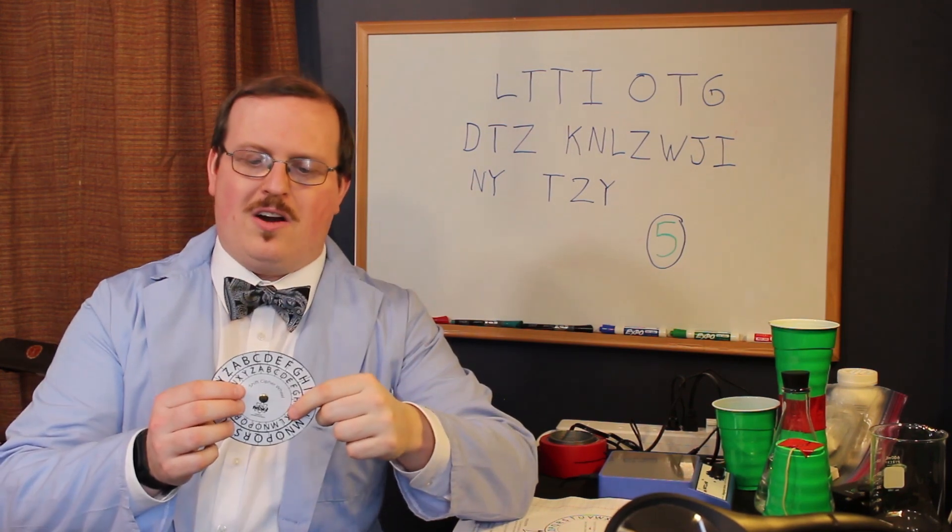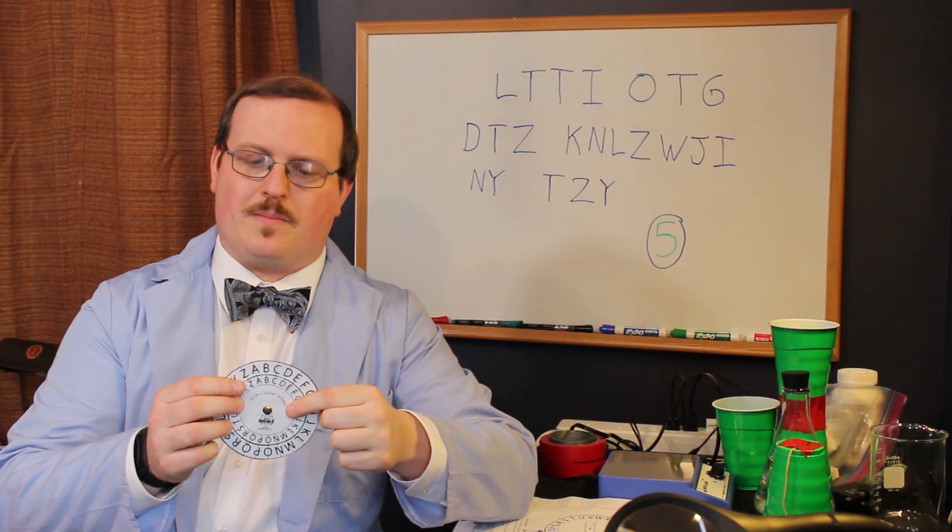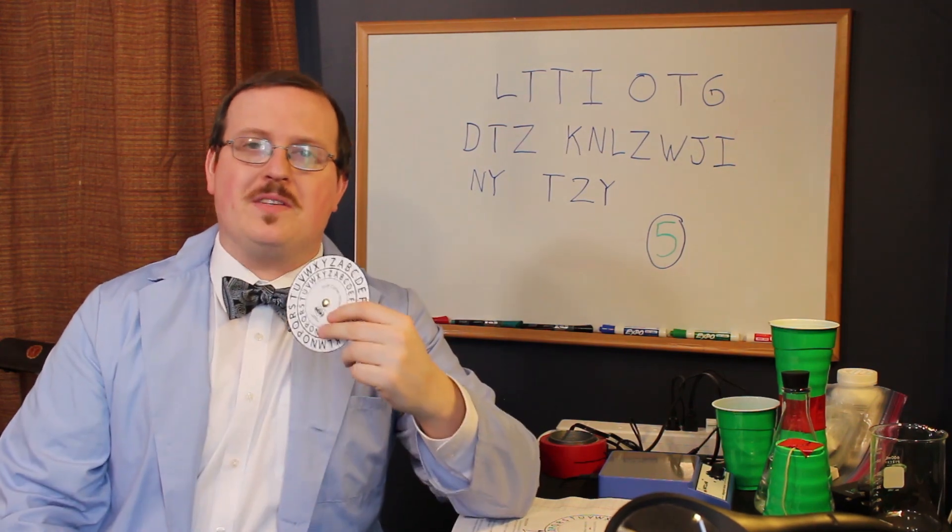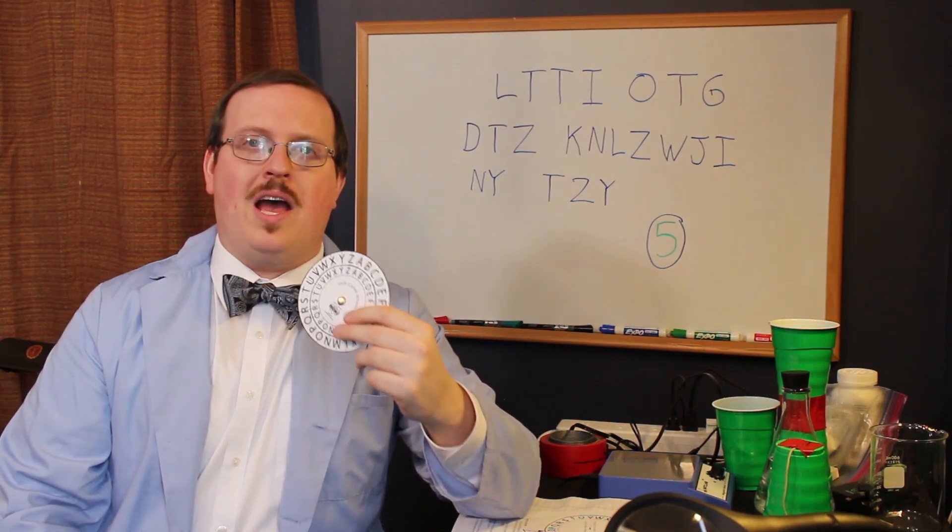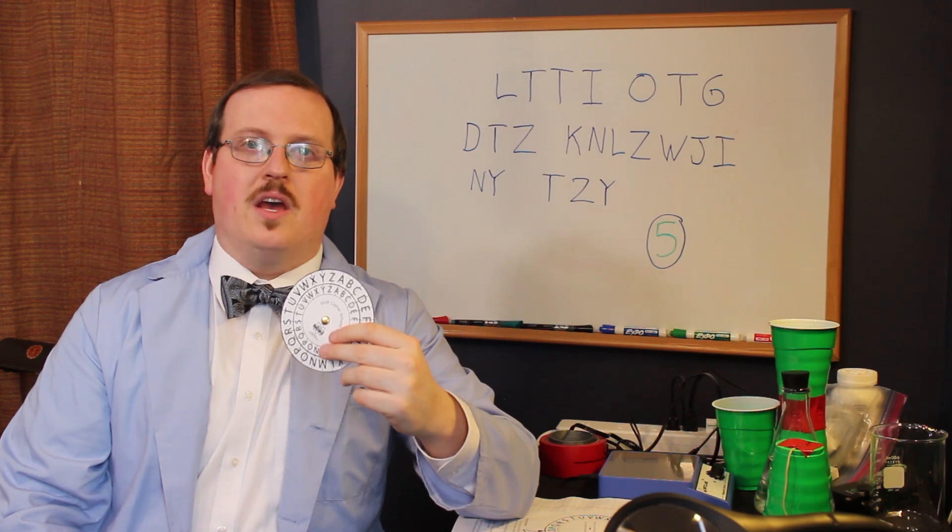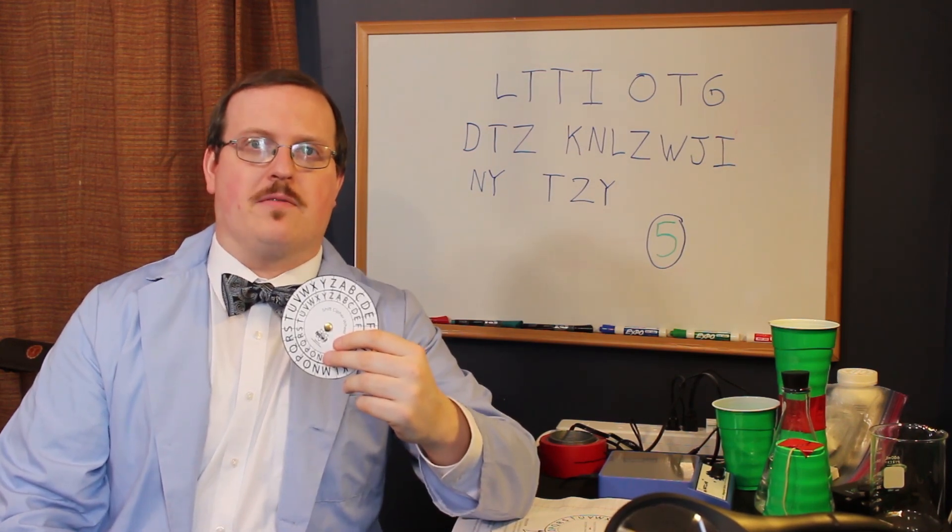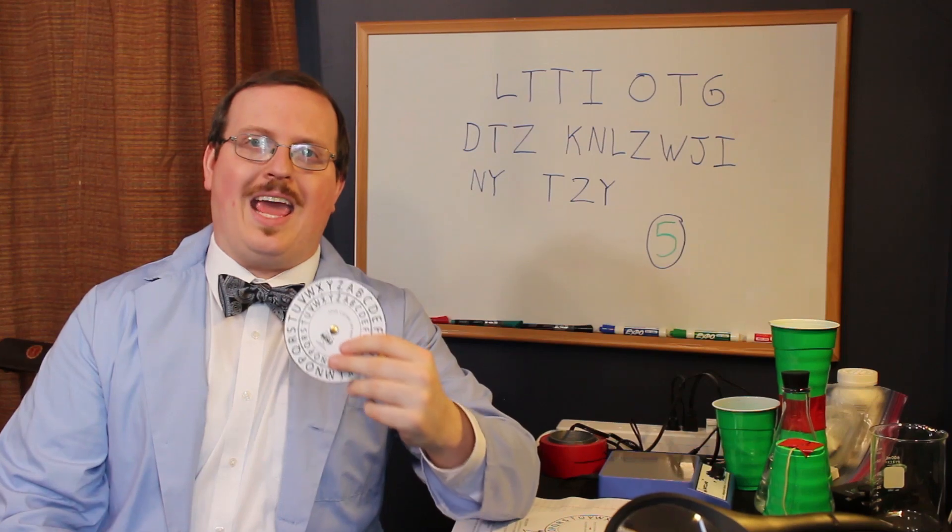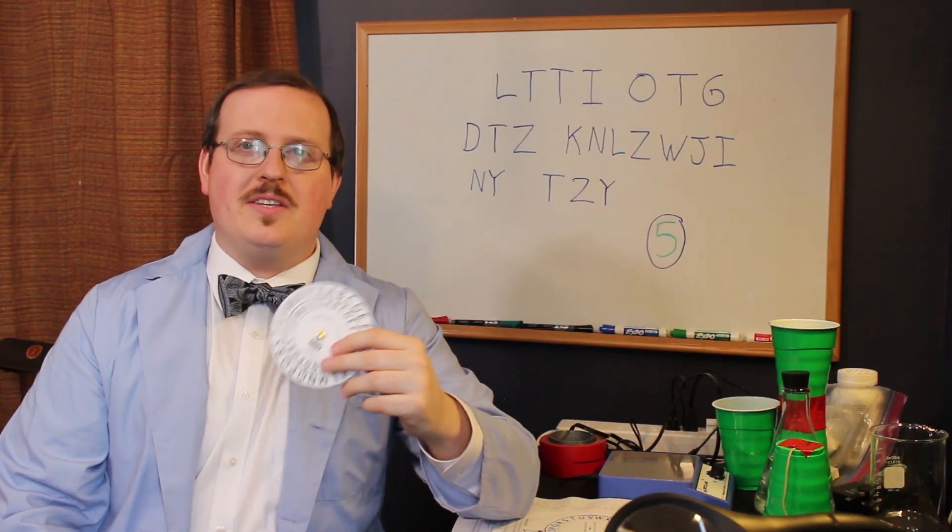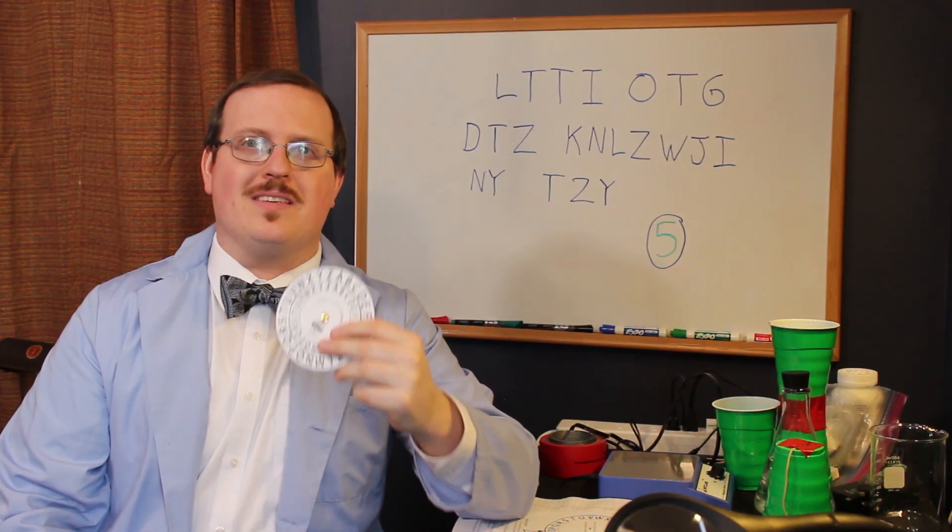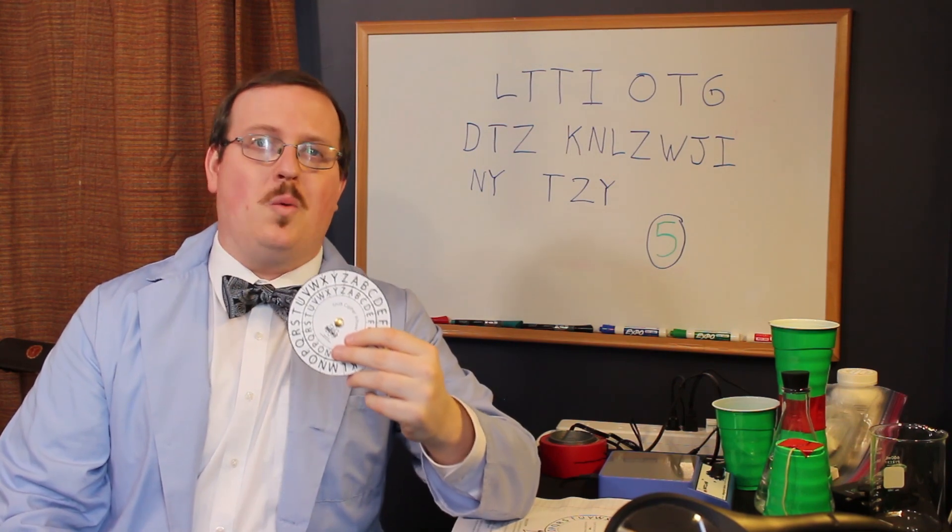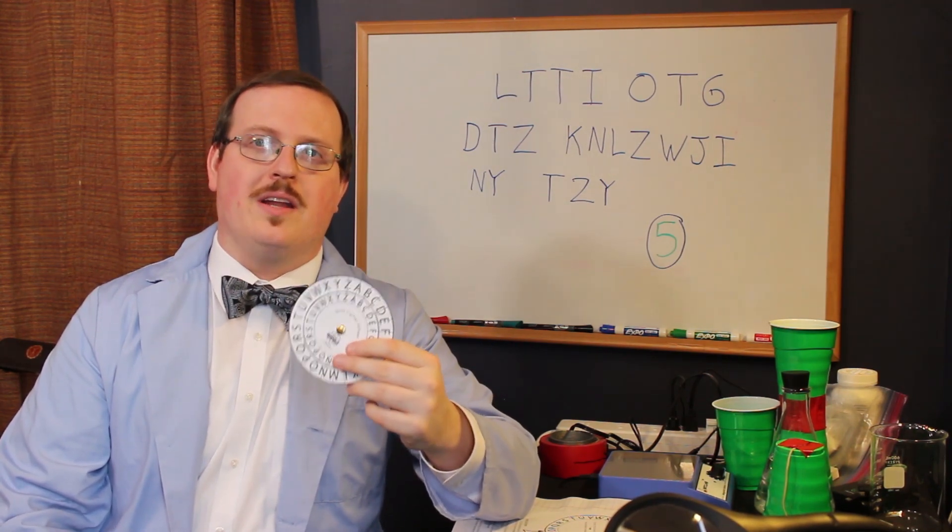This shift cipher has been around for thousands of years. In fact, sometimes you might hear it called a Caesar cipher because it was used in ancient Rome. This is one of the most simple ciphers, one of the most simple ways of locking up information that you can think of.